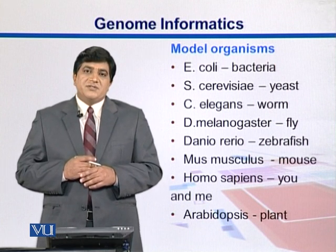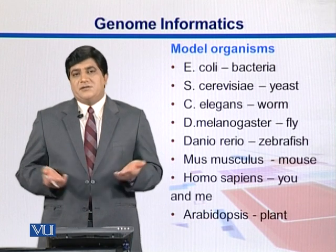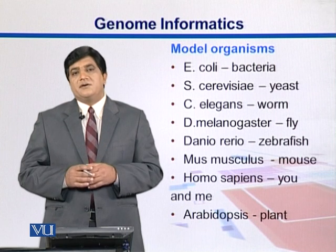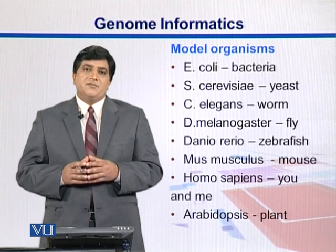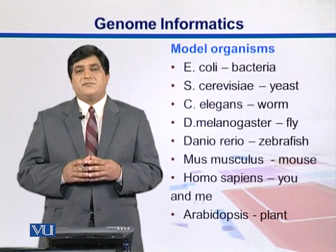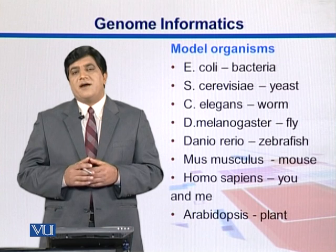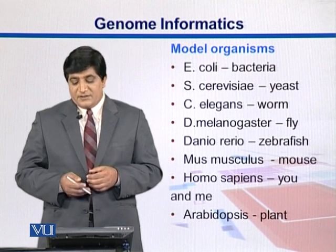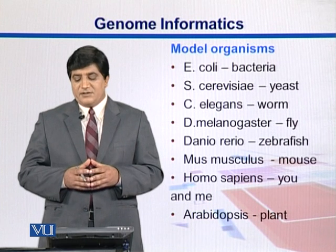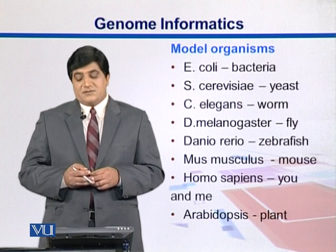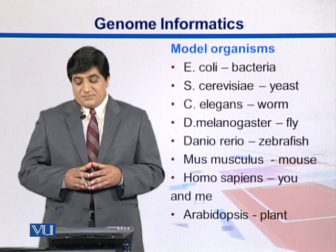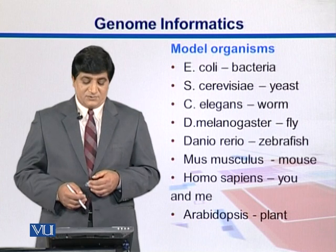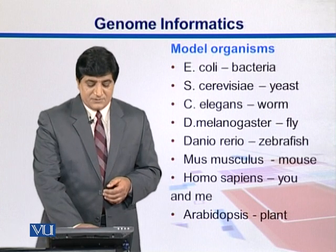Most of the time, the objective of genome sequencing projects is the health of humans — looking for correction of diseases, improving crop varieties for more food, or finding drugs against different organisms. It's a good idea to use model organisms to study these processes in labs. A range of model organisms has been selected: E. coli as a bacterium, yeast, C. elegans, a fly, zebrafish, mouse, Homo sapiens, and from plants, Arabidopsis is considered a good model.